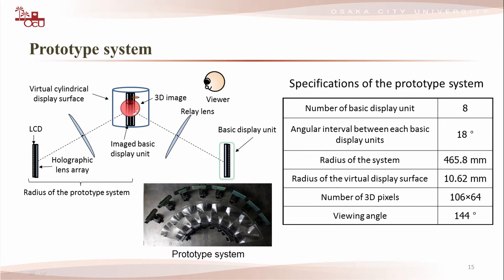The required number of basic display units to realize the virtual cylindrical display surface observable from 360 directions is given by this value. We constructed the prototype system using eight basic display units to verify the effectiveness of the proposed method. The prototype system is a part of the proposed system. The angular interval between each basic display unit is 18 degrees. The radius of the virtual display surface is 10.62 mm. The viewing angle of the prototype system is 144 degrees. This is a picture of the prototype system.